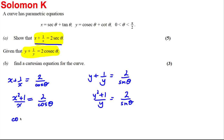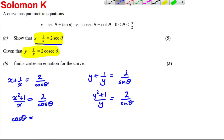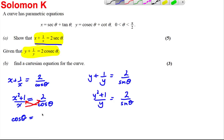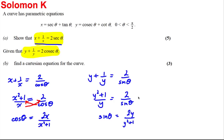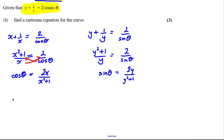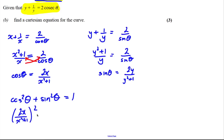Making cos θ the subject by cross-multiplying: cos θ equals 2x over (x² + 1). Similarly, sin θ equals 2y over (y² + 1). The identity we apply is cos²θ plus sin²θ equals 1. Therefore the Cartesian equation is: [2x/(x² + 1)]² plus [2y/(y² + 1)]² equals 1, and that is a sufficient Cartesian equation.